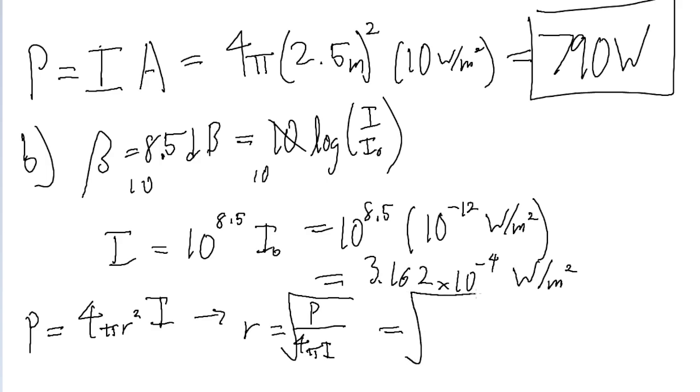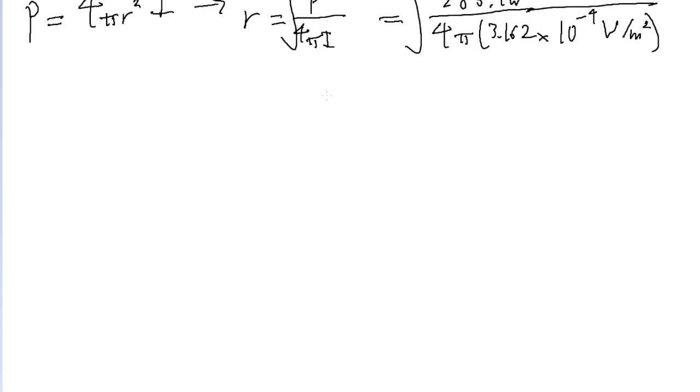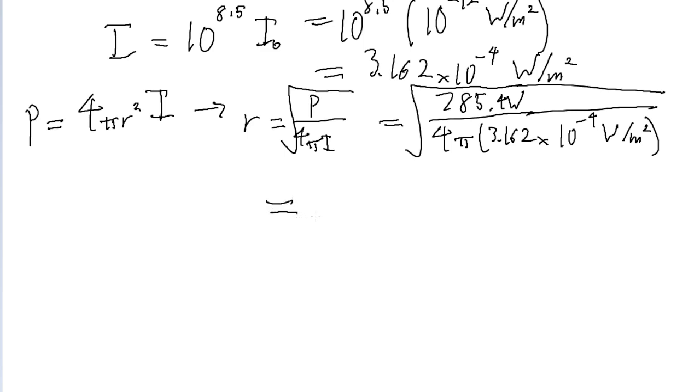So the power, and I'm going to use the unrounded value that my calculator gave me for part A, which was 785.4 watts, all divided by 4π times the intensity of 3.162 times 10 to the power of negative 4 watts per meter squared. If you put this into a calculator, we find a distance of about 444.6 meters, or rounding this a bit, 440 meters.